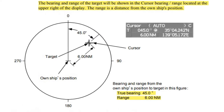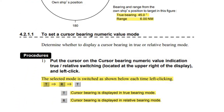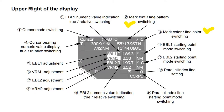Put the cursor on the cursor bearing numeric value indication — true/relative switching — located at the upper right of the display, and left click. The selected mode is switched each time you left click: T — cursor bearing is displayed in true bearing mode; R — cursor bearing is displayed in relative bearing mode.